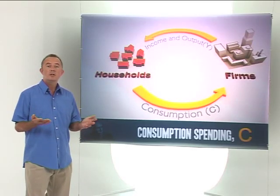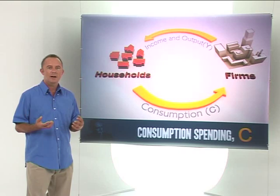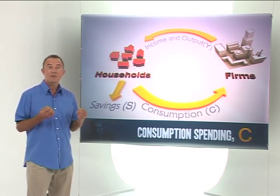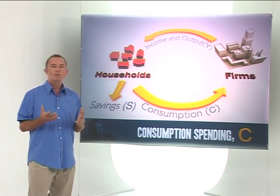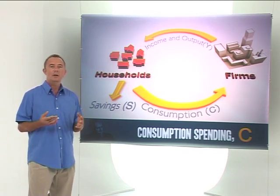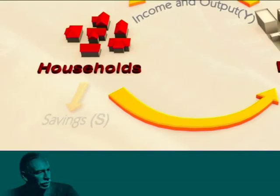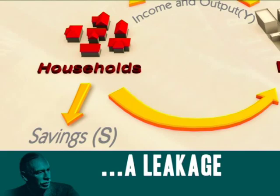So what happens to the other 20 million? Well, for the most part, households will save this surplus income, and it fits into our circular flow diagram as a flow of savings. As a general rule in this model, what is not spent is saved. Savings is therefore our first leakage from the spending flow.